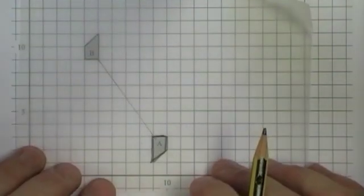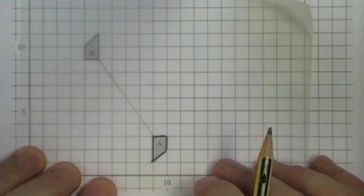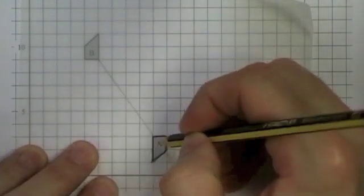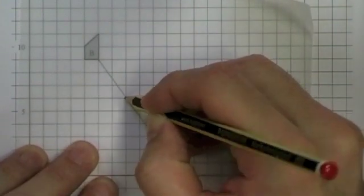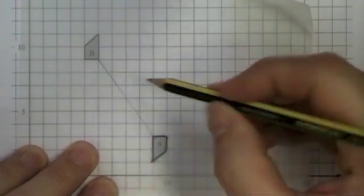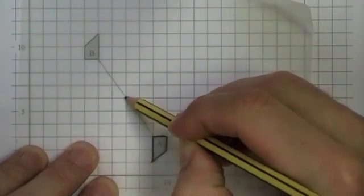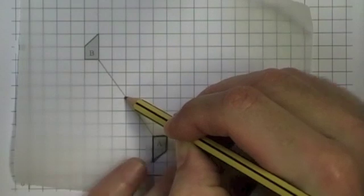I'm going to put my tracing paper there on A. I'm halfway, I think, is there. I believe that's going to be the center. I'm going to hold my pencil very firmly and rotate 180 degrees. Just to check it. Yes, that fits on to shape B.